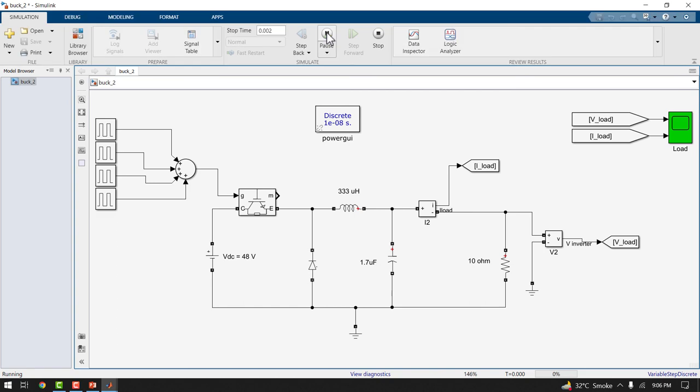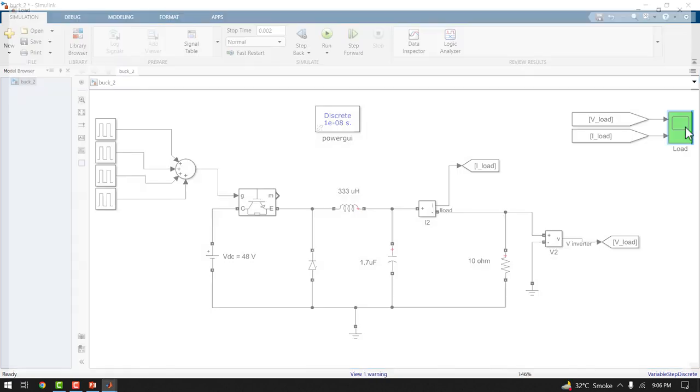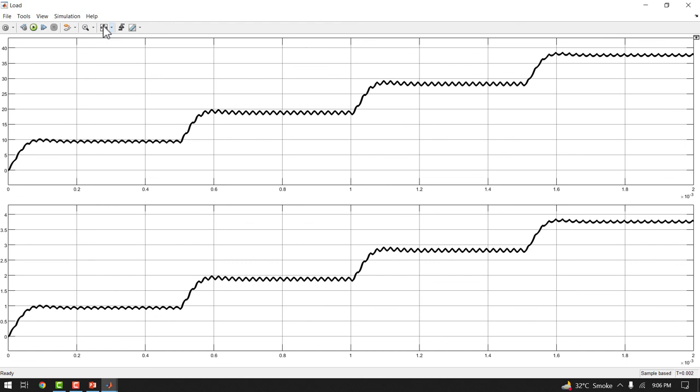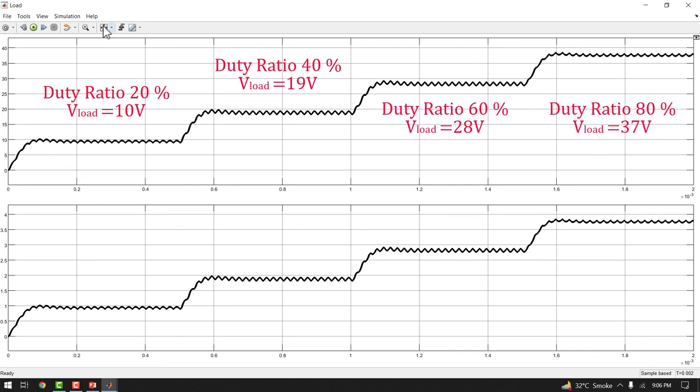Now run the simulations. Now check the results. When the duty ratio is 20% then the output voltage is around 10V. And when the duty ratio is increased to 40% then load voltage increases to 19V.